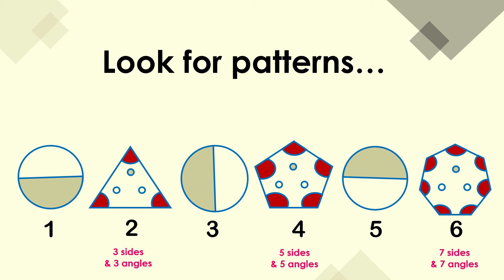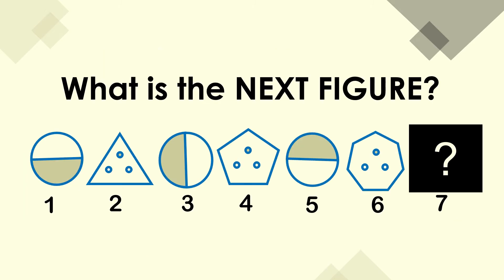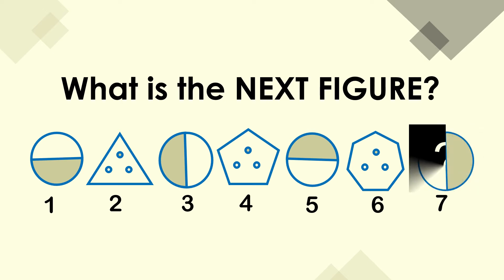The even-numbered shapes are polygons with consecutive odd number of sides and angles. We also observe that there are 3 small circles in each: the 2 on the bottom are hollow and the centered one at the top is solid or shaded. So what do you think will be the next figure? From the patterns that we observe, we may conclude that the next figure will be a circle which is half-shaded on the right side.